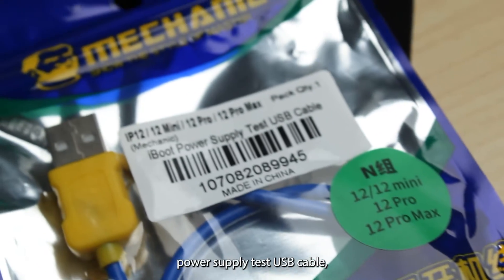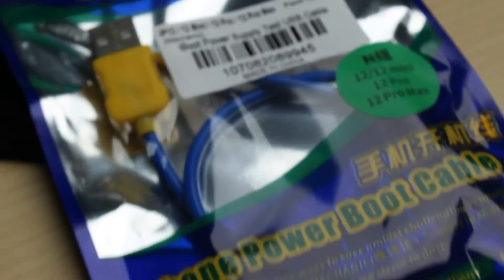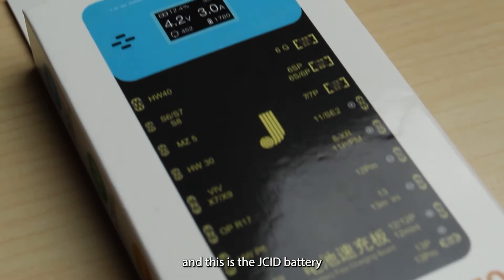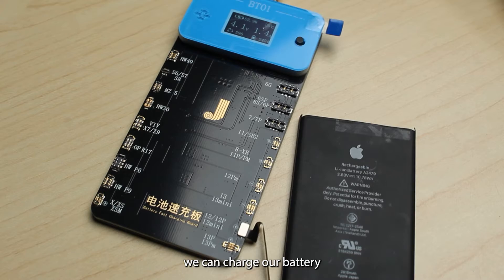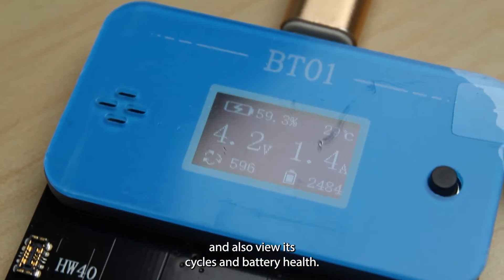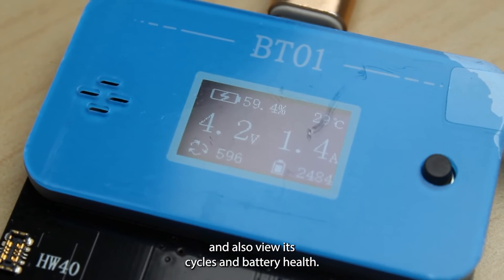This is the iBoot power supply test USB cable and this is the JCID battery fast charging board. While we work on our device we can charge our battery and also view its cycles and battery health.